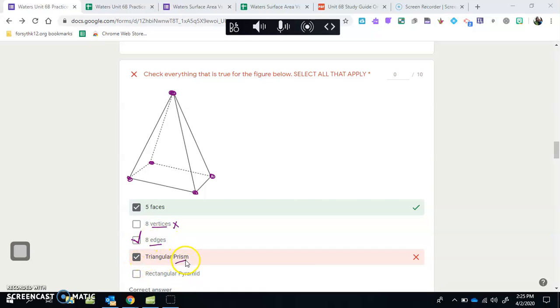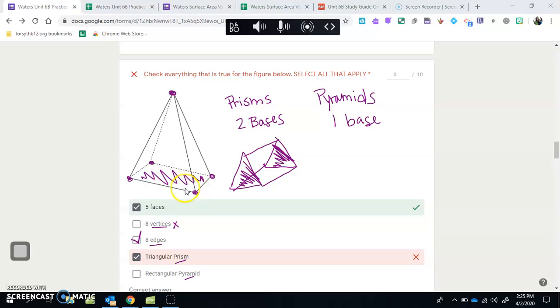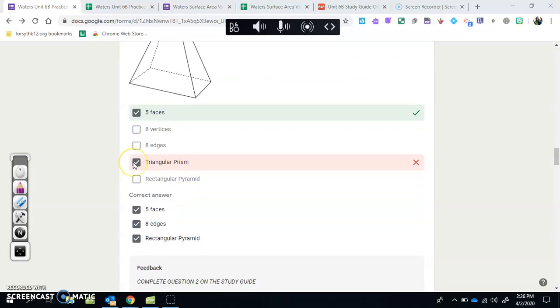Now prisms - let's talk really quickly about the difference between prisms and pyramids. Remember that prisms have two bases. For a triangular prism, the bases would both be triangles - here's a triangle and here's a triangle. They would be attached - they're parallel with each other. This is what a prism looks like, and the bases are those parallel sides. Now pyramids have one base. This base down here is the one base on this pyramid. What shape is it? It's a rectangle, so that's why it's a rectangular pyramid. We shouldn't have checked this one, but we do need to check the rectangular pyramid.